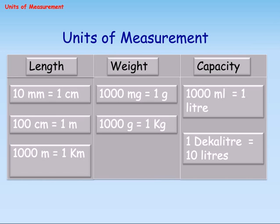Units of Measurement. Length: 10 mm equals 1 cm, 100 cm equals 1 m, 1,000 m equals 1 km. Weight: 1,000 mg equals 1 g, 1,000 g equals 1 kg.